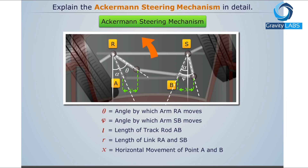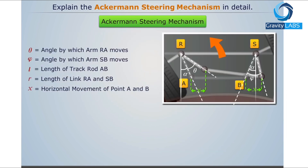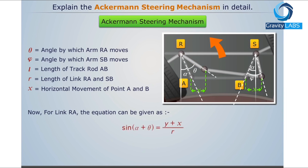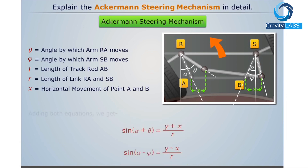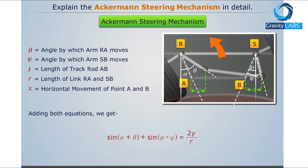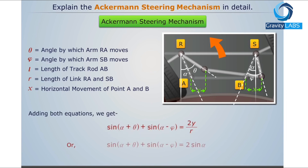According to the diagram, for link RA the equation can be given. Similarly, for link SB the equation can be given. On adding both equations we get the resulting equation. Thus we achieve the equation for perfect steering.